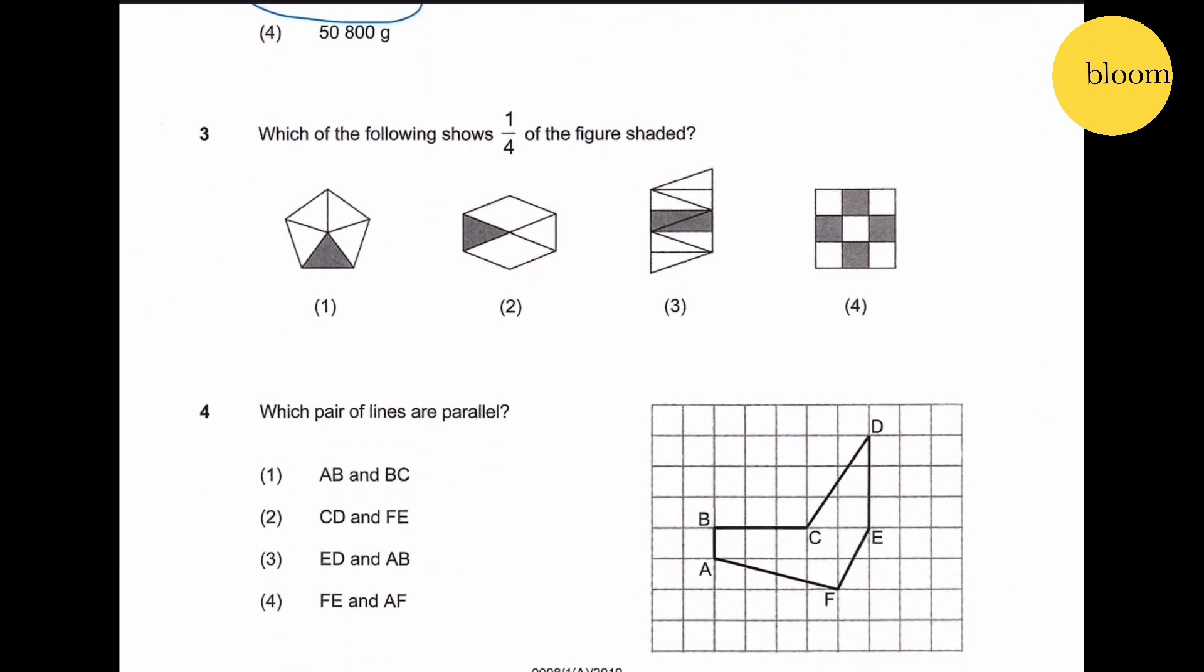Question number three: which of the following shows one quarter of the figure shaded? This is five - one, two, three, four, five, so this is not. This is one, two, three, four but it's not of the same shape, wrong. This is one, two, three, four, five, six, seven, eight. This is a triangle, half of the triangle, this is also a triangle half, so two over eight is one quarter. So this is correct. This is three - one, two, three, four, four over nine, so this is not correct. Answer for number three is three.